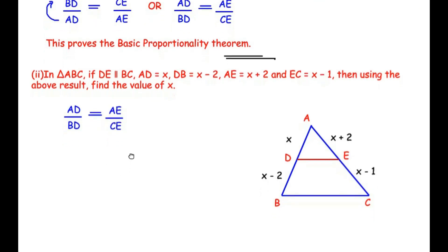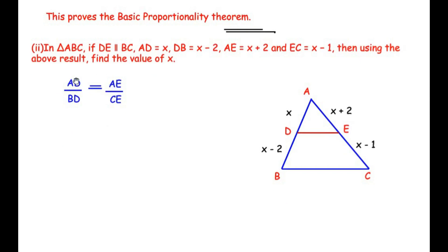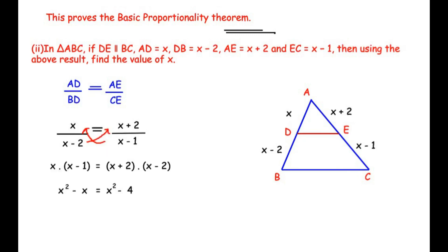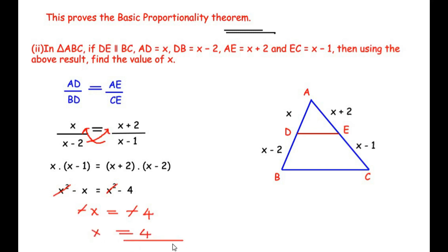Using the basic proportionality theorem result AD over BD equals AE over CE, we substitute the values: x over (x − 2) equals (x + 2) over (x − 1). Cross multiplying: x(x − 1) = (x + 2)(x − 2). Expanding the left side: x² − x. The right side is of the form (A + B)(A − B) = A² − B², giving x² − 4. So x² cancels from both sides, leaving −x = −4, and therefore x = 4.